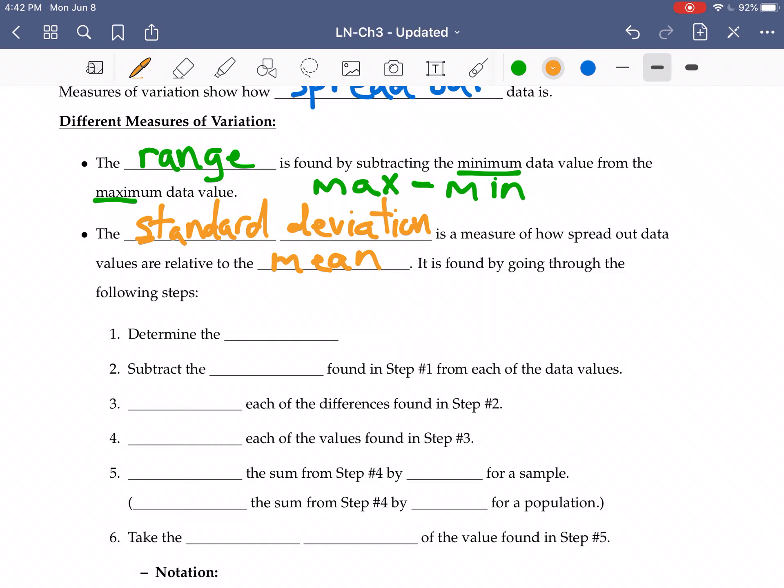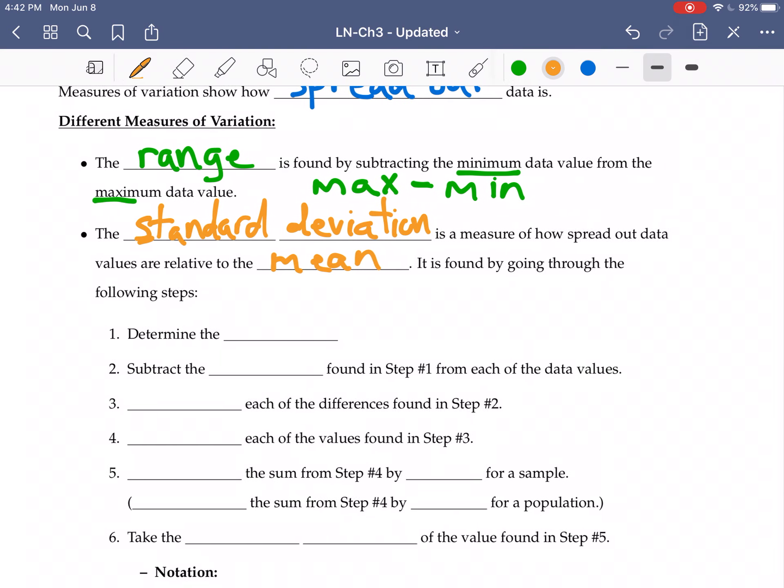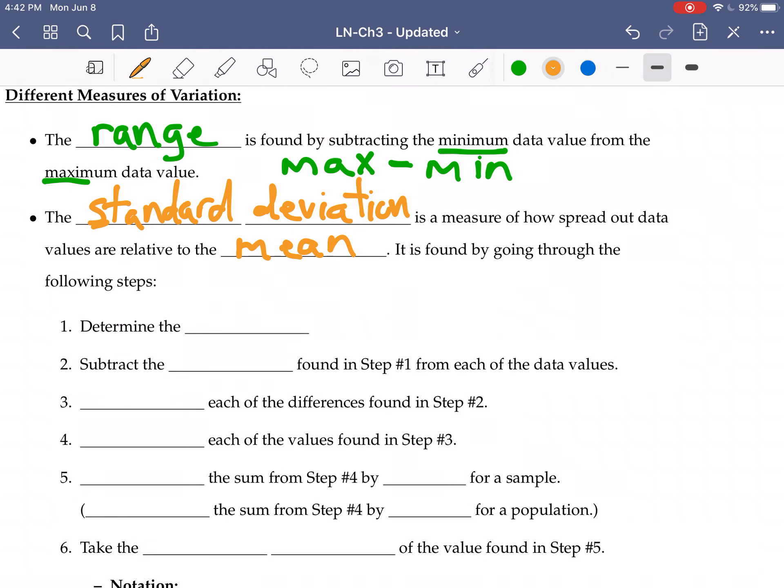So I will jot those, we will talk about those steps here. Then I'll jot down a formula that describes all of those steps in a single formula. But the first thing we're going to need to do is we need to find out what is the mean. If we're going to find out how spread out it is relative to the mean, we need to know what the mean is. We subtract the mean that was found in step one from each of those data values.